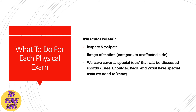For musculoskeletal exams — whether it's an elbow, knee, or ankle exam — you inspect and palpate, check range of motion on both sides, and compare the affected to the unaffected side. There are also several special tests for the knee, shoulder, back, and wrist that we'll discuss shortly.